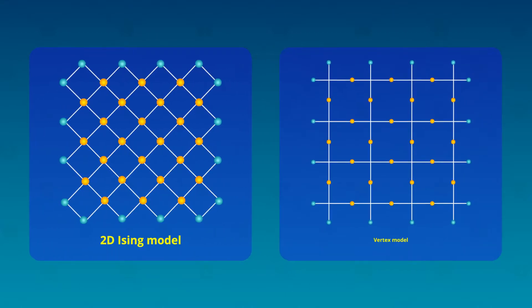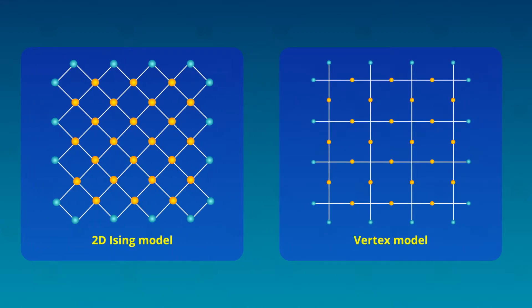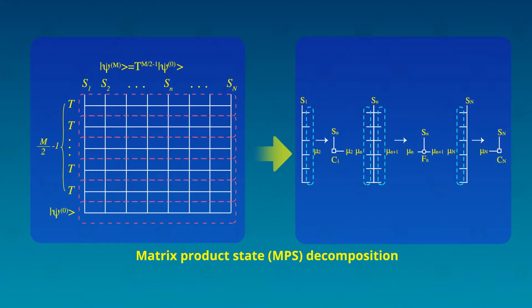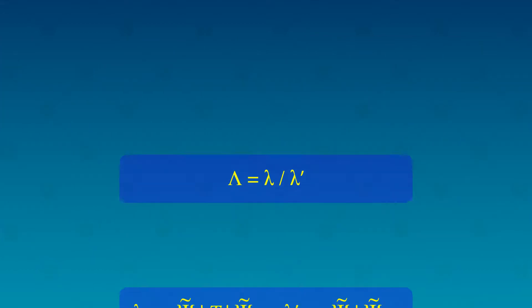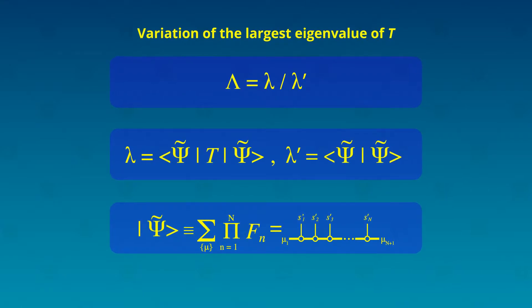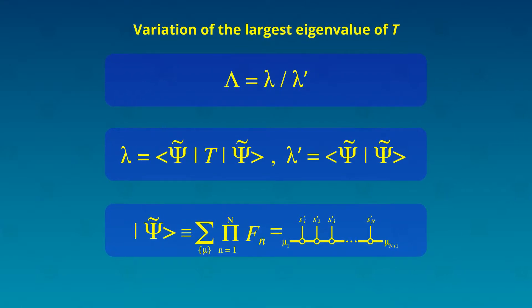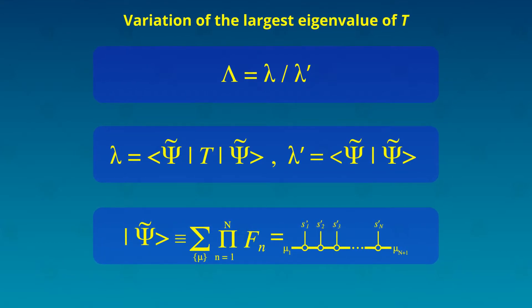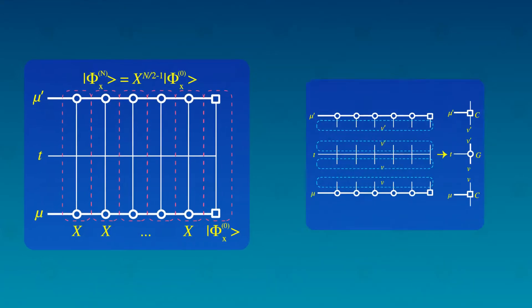They showed that using a vertex model representation with four leg tensors and a row-to-row transfer matrix T leads very naturally to a variational state in the matrix product state, or MPS form, which reflects the transfer matrix structure of the square lattice. Further consideration of the variation of the largest eigenvalue of T showed the equivalence of this variation with the variational principle of the MPS for the 1D quantum system.